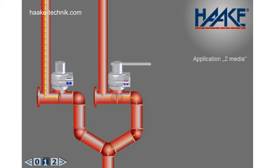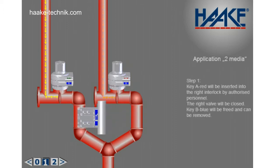Step 1. Key A red will be inserted into the right interlock by authorized personnel. The right valve will be closed. Key B blue will be freed and can be removed.